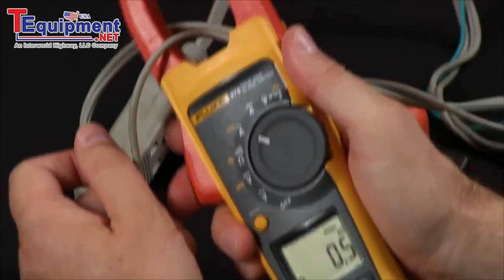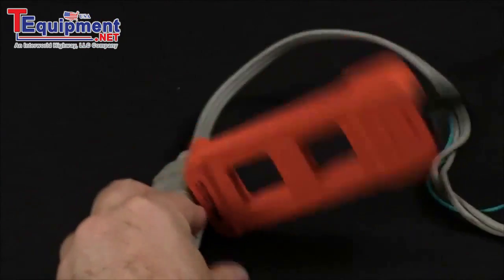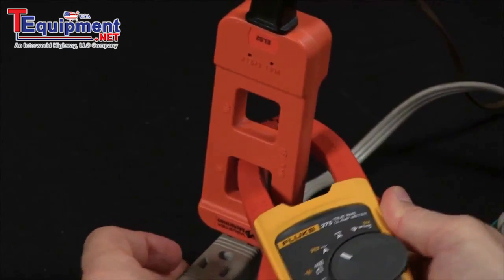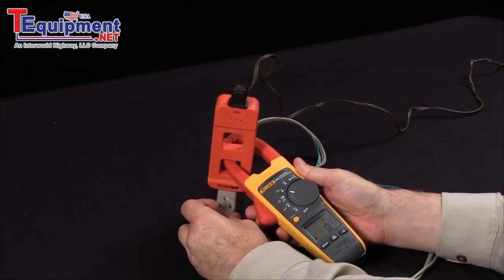Now this is also a good application to use one of our line splitters. I have an x1 and an x10 winding, so measuring through the x1, you'll see I have the same indication.